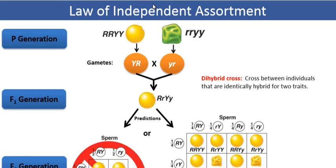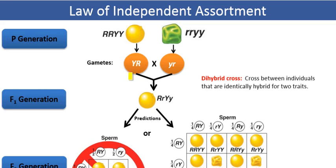All the gametes produced by the plant with the dominant phenotype — the yellow round seeds — will have the same dominant genotype, YR, representing the genotype that has both dominant alleles for seed color and seed shape. All the gametes produced by the plant with the recessive phenotype will have the recessive genotype — the small y and small r — representing the recessive alleles for seed color and seed shape.